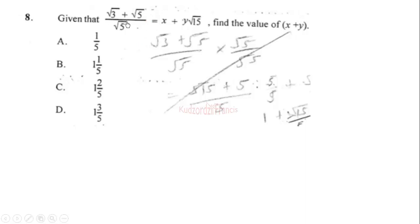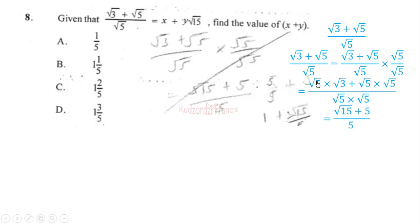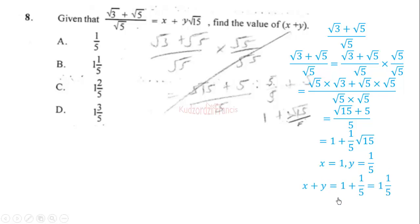Question 8: given (√3 + √5) / √5 = x + y√15, find x + y. We rationalize by multiplying numerator and denominator by √5. This gives (√15 + 5) / 5. Separating terms: 1 + (1/5)√15. So x = 1 and y = 1/5. Therefore x + y = 1 + 1/5 = 1 and 1/5.